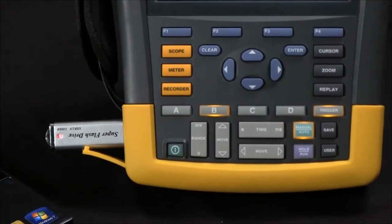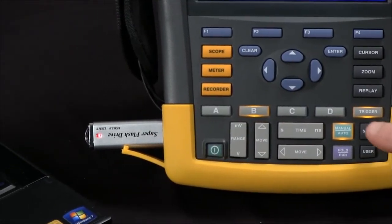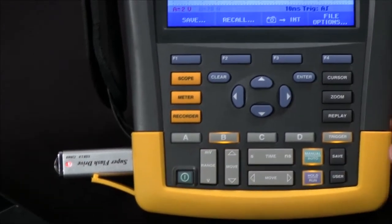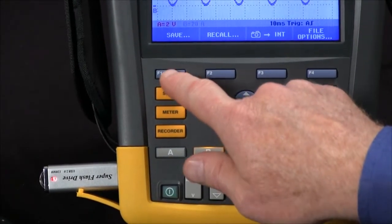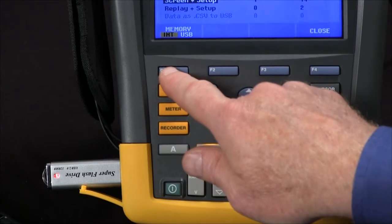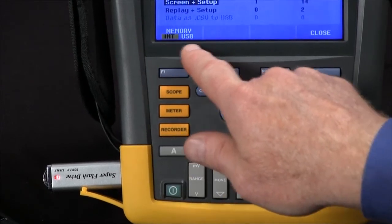Once the memory stick is installed, we simply hit the Save button, hit F1 for Save, and select F1 to change from internal memory to USB.